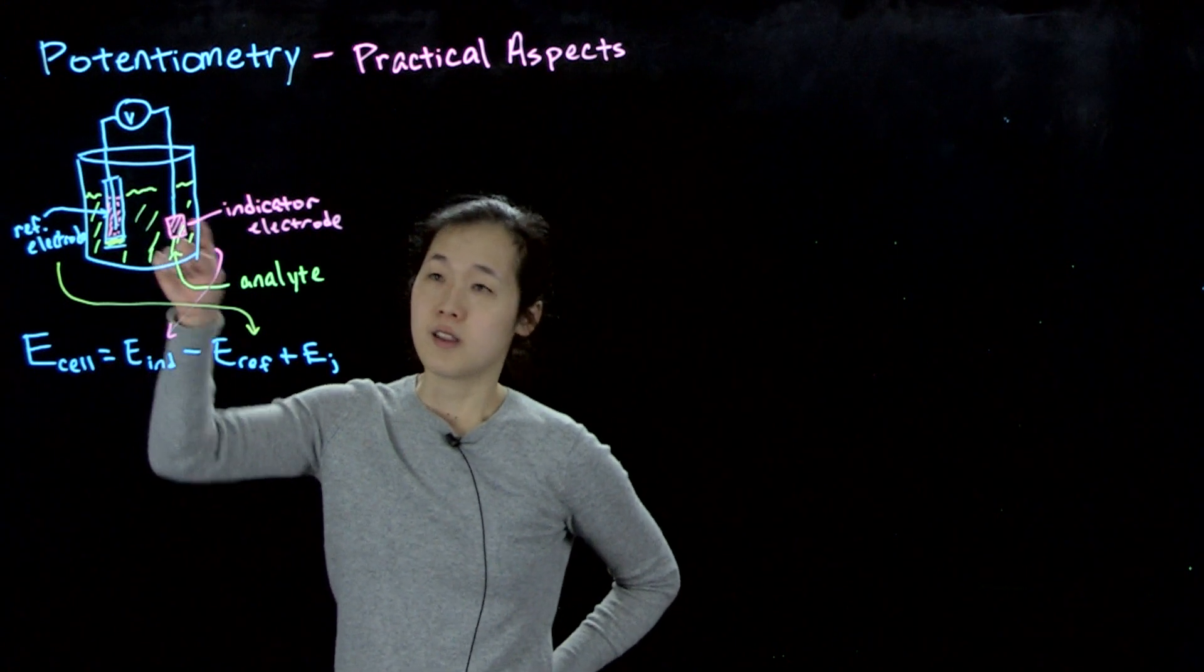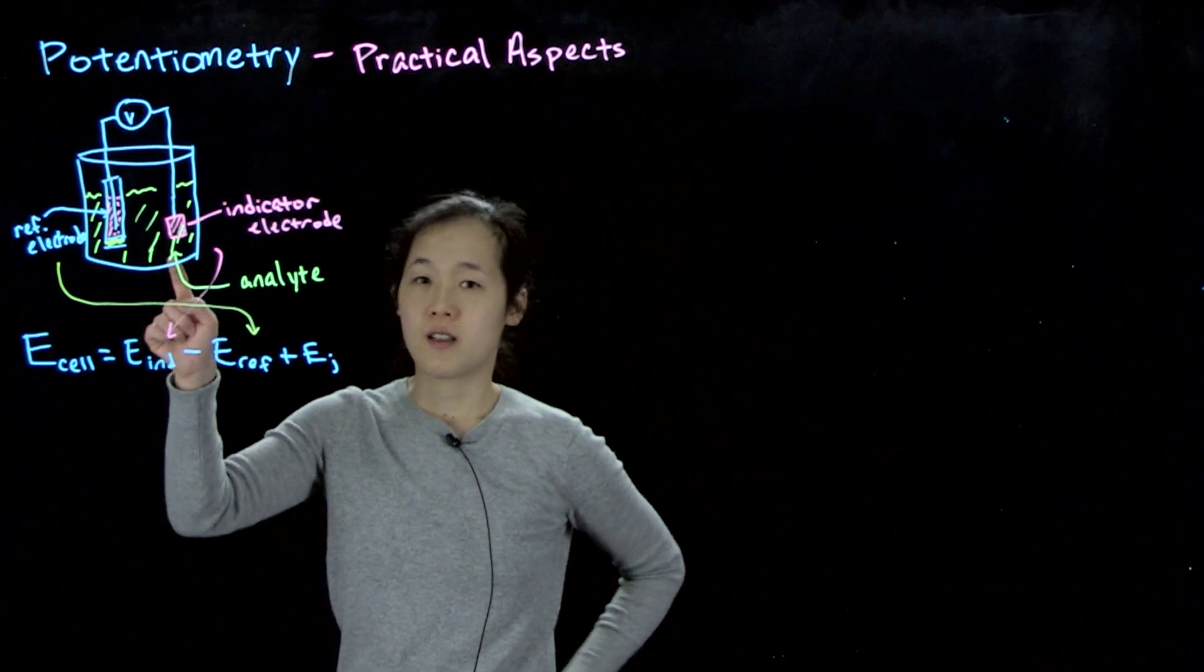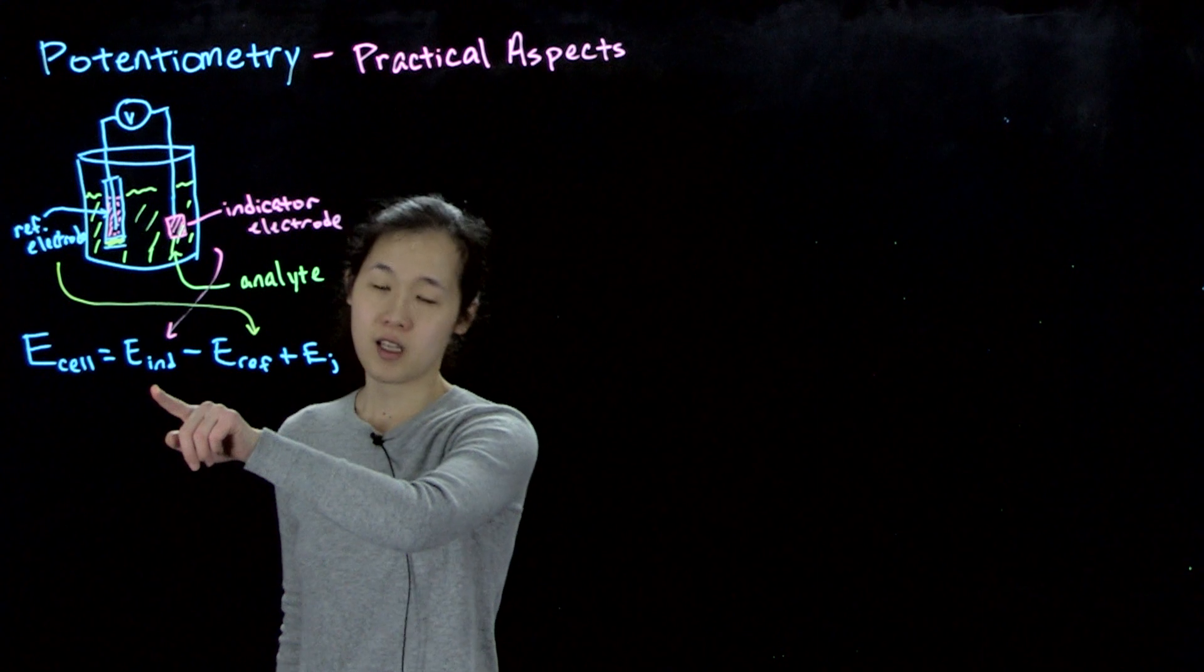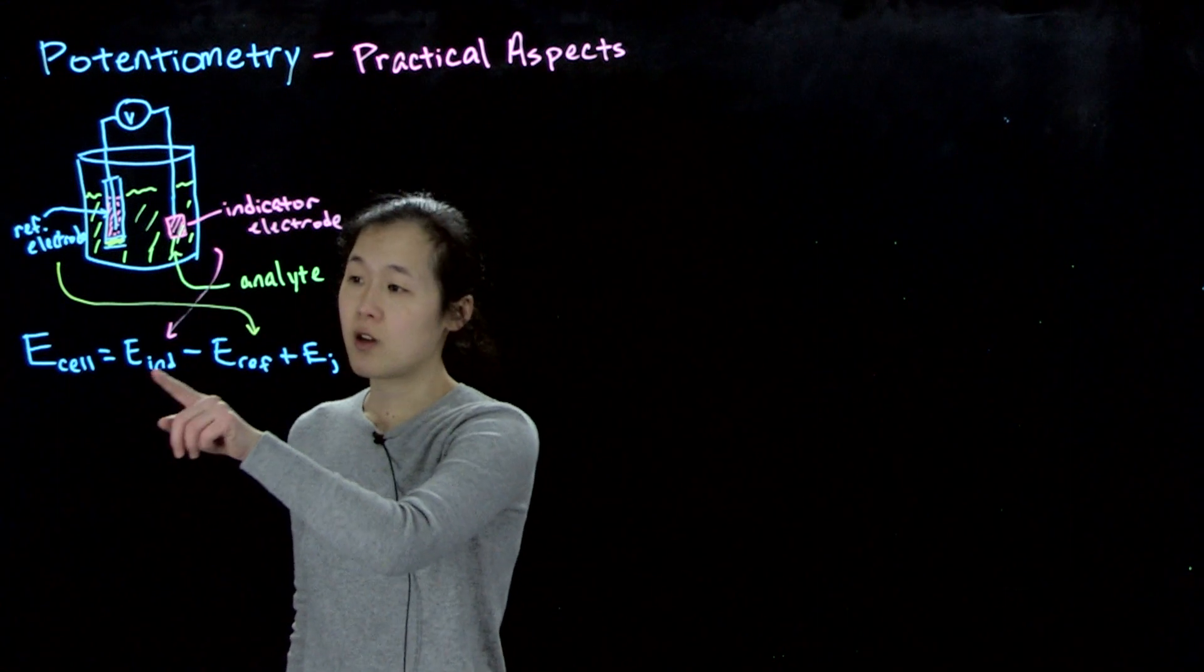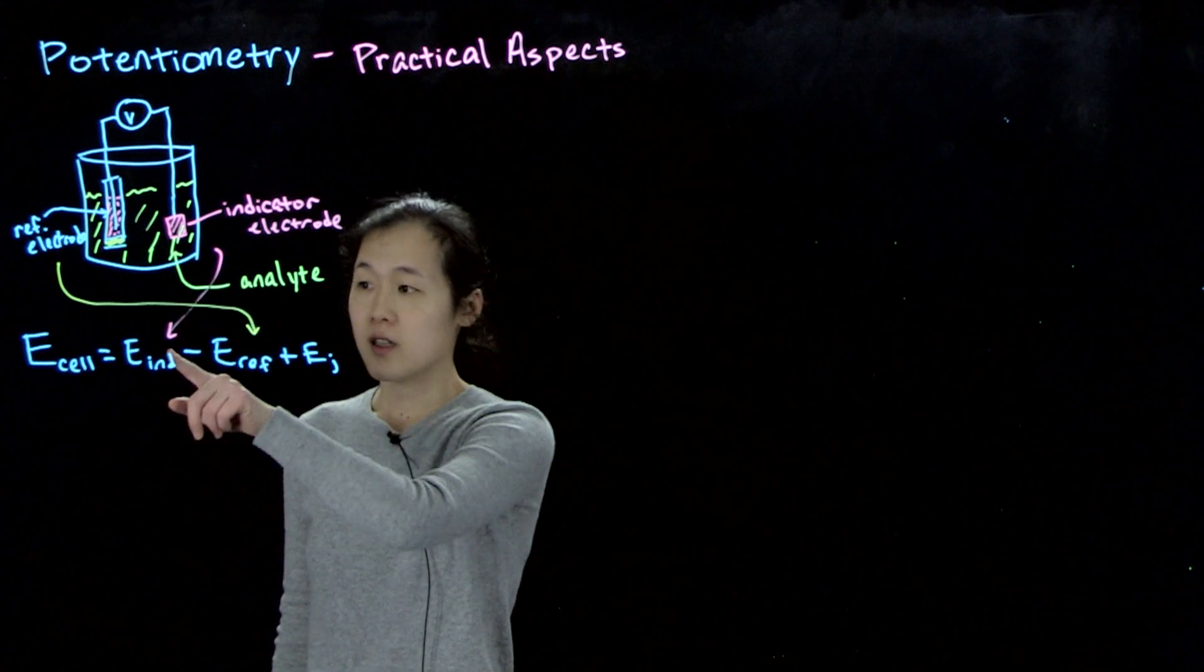The other half-reaction occurs at this indicator electrode, which is what's interfacing with the analyte. So this potential at the indicator electrode gives us E indicator, and this is the potential we're interested in. So we want to know what E ind is, and this will give us then the concentration of analyte. So we don't know this.